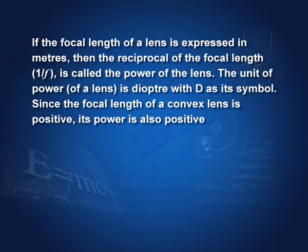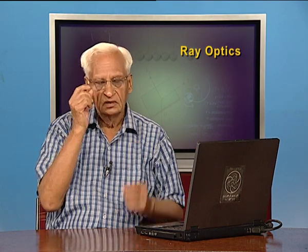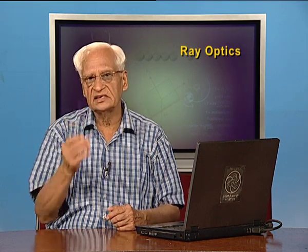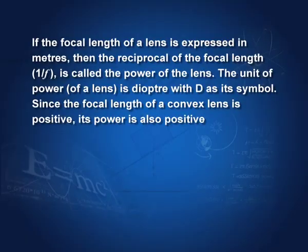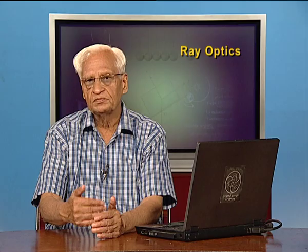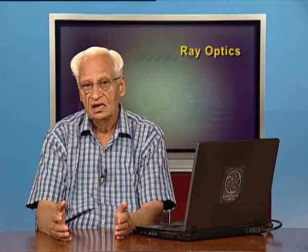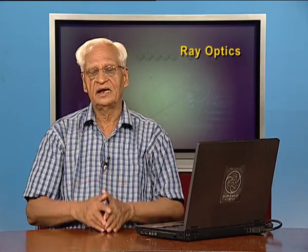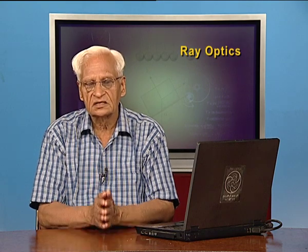If the focal length of a lens is expressed in meters, then 1 by F is called the power of the lens, measured in diopters. For example, a focal length of 10 cm (0.1 m) gives a power of 10 diopters. A focal length of 20 cm gives 5 diopters, and 100 cm gives 1 diopter. Power carries the same sign as 1/F — positive for a convex lens and negative for a concave lens.